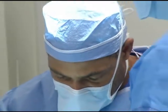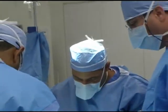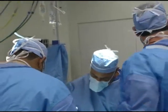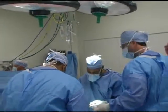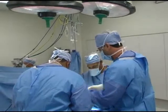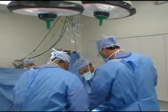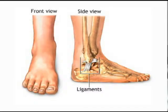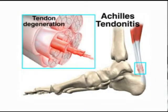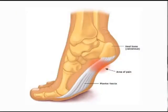Surgery is indicated after the failure of conservative treatment. If a patient continues to have pain and/or dysfunction and we've exhausted the non-surgical treatment options, surgery is often indicated. With an ankle sprain it is quite often a ligament reconstruction, most commonly called a Brostrom procedure. We also see a significant number of Achilles tendon problems and plantar fasciitis, which is a common overuse injury.